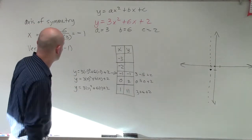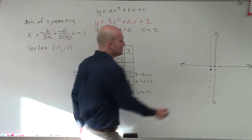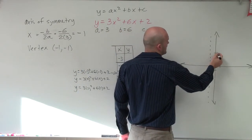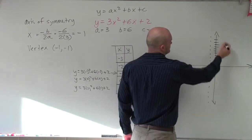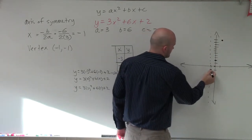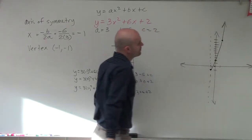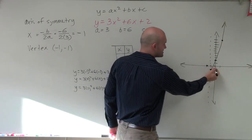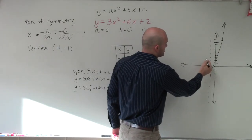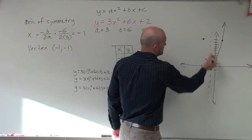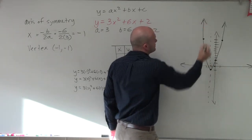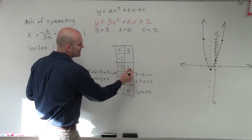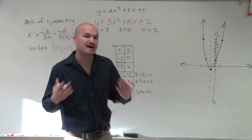That's going to be the minimum point on my graph. I can plot 0 comma 2 and 1 comma 11. When I reflect over the axis of symmetry, the point at x equals negative 2 comes up to y equals 2, and at x equals negative 3 it comes up to y equals 11. So the graph follows a parabolic path. This is why it's so important to find the axis of symmetry — rather than plugging in all those points, I know that negative 2 gives 2 and negative 3 gives 11 just by applying symmetry.